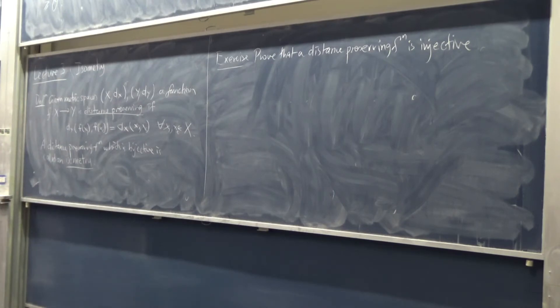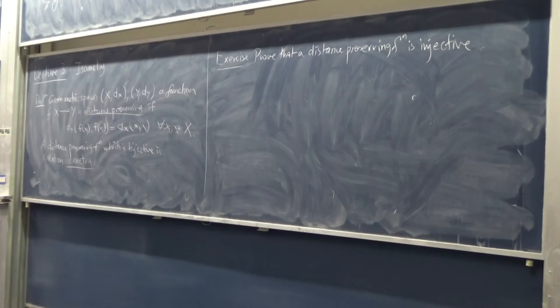So by the exercise, a distance-preserving function is a bijection if and only if it's surjective. So that's an isometry: a distance-preserving bijection between two metric spaces.